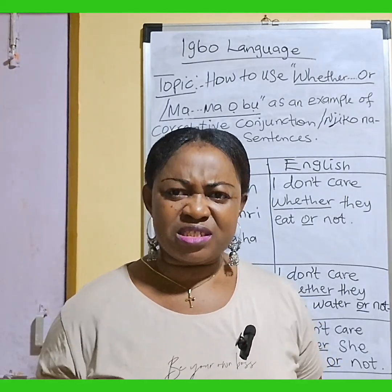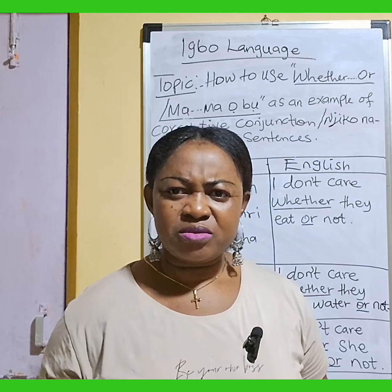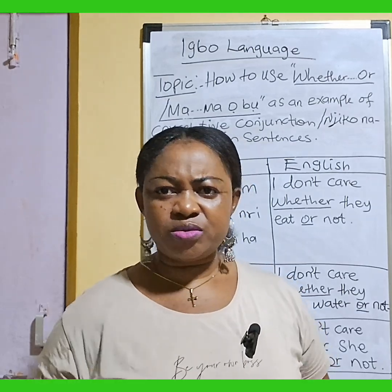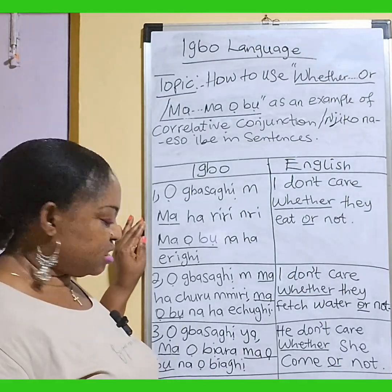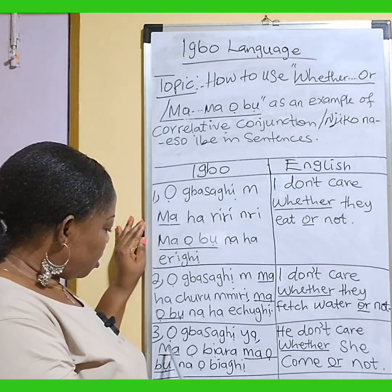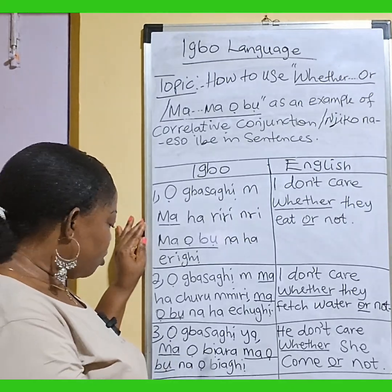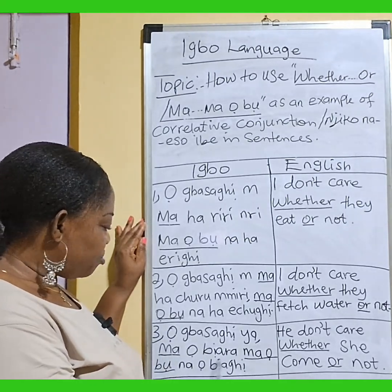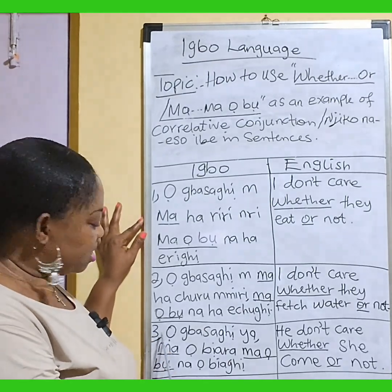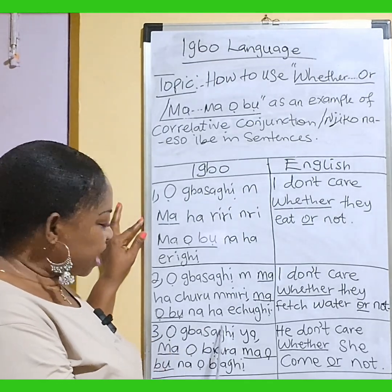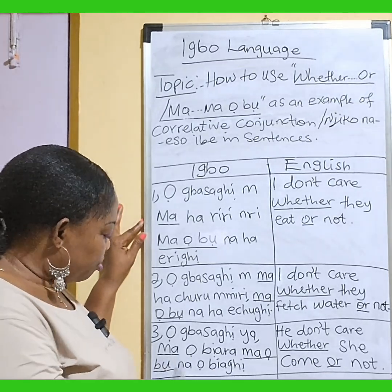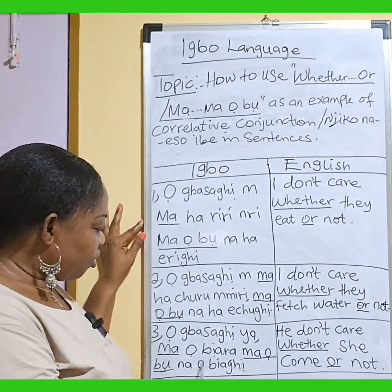Something that you don't have interest in — use 'whether or.' Number three sentence says: 'Obasa niya ma obya ra ma obo ma obya ni.' Class, repeat after me. Number three: 'Obasa niya ma obya ra ma obo ma obya ni.'